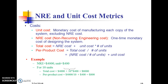NRE and Unit Cost Metrics: Unit Cost is the monetary cost of manufacturing each copy of the system excluding NRE cost. NRE Cost is the one-time monetary cost of designing the system. Total Cost = NRE Cost + (Unit Cost × Number of Units). Per Product Cost = Total Cost / Number of Units = (NRE Cost / Number of Units) + Unit Cost.